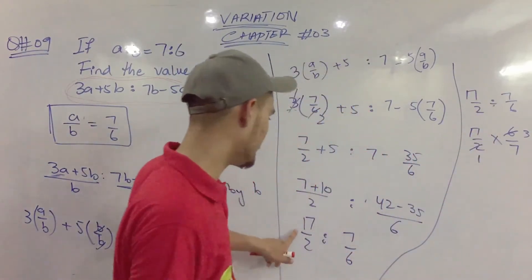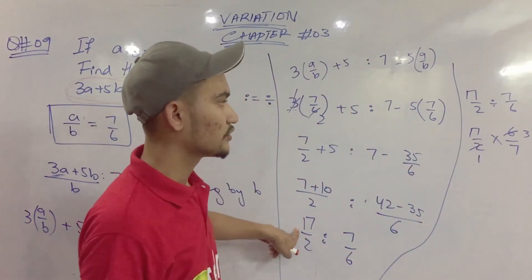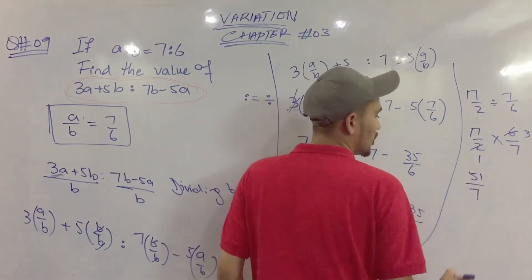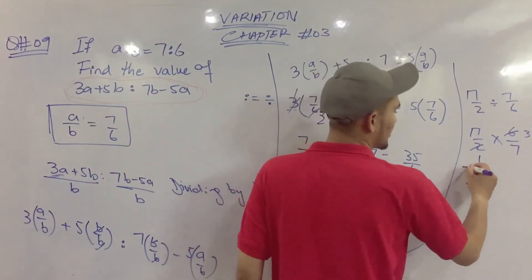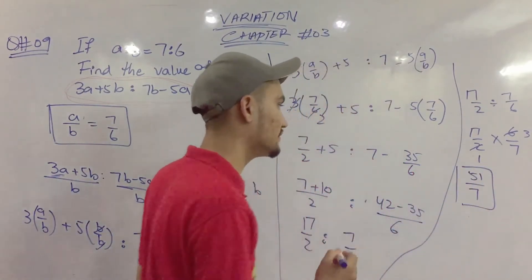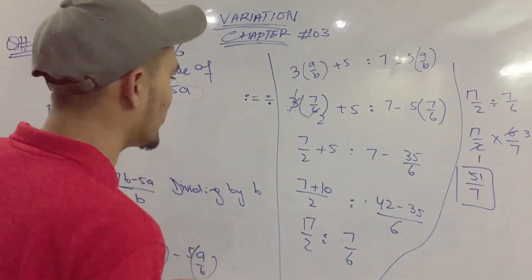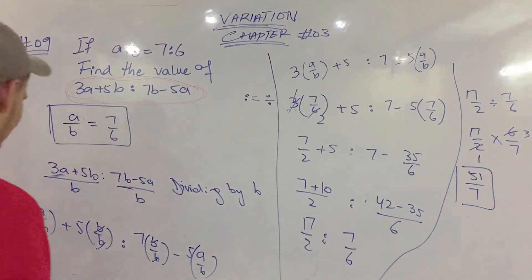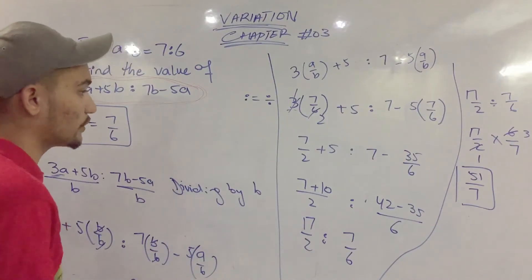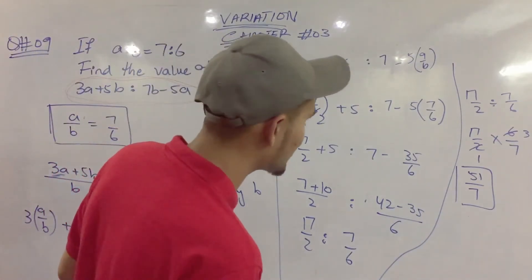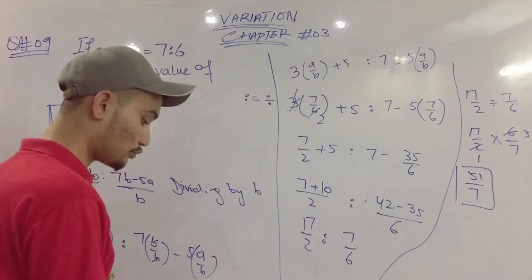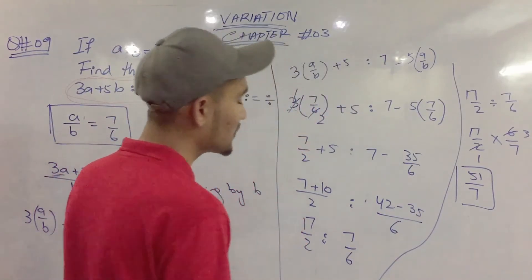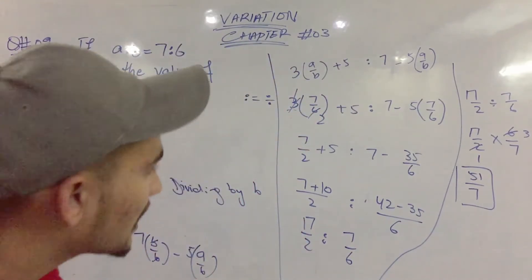So 17 multiplied by 3 gives us 51. The final answer is 51 divided by 7, so the ratio is 51 ratio 7. We can verify this with a calculator: 51 divided by 7 is our answer.